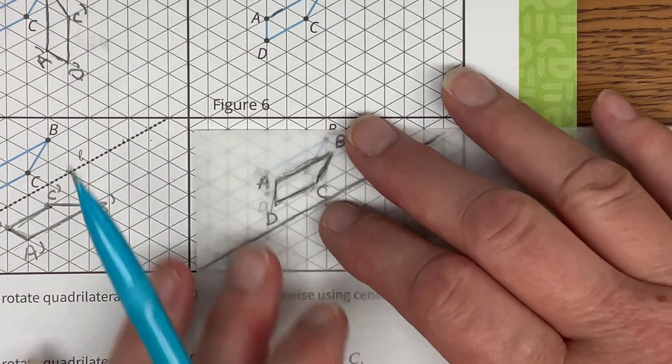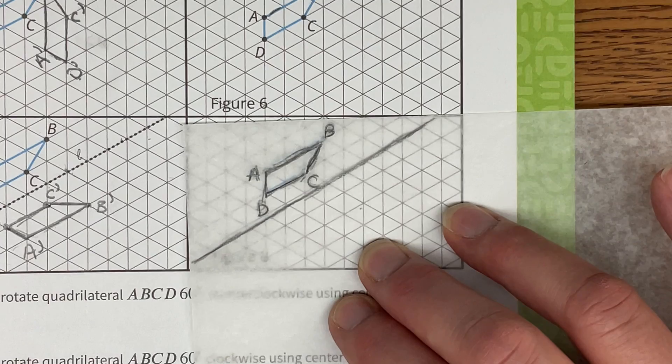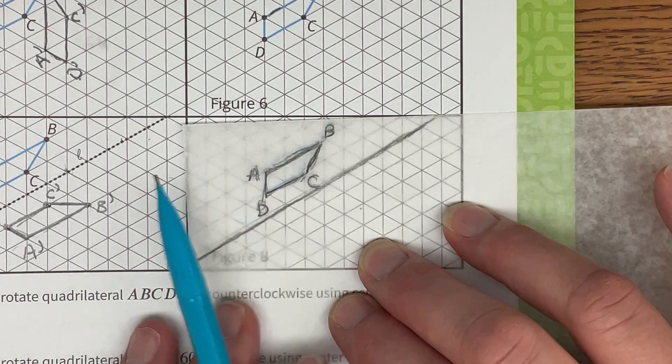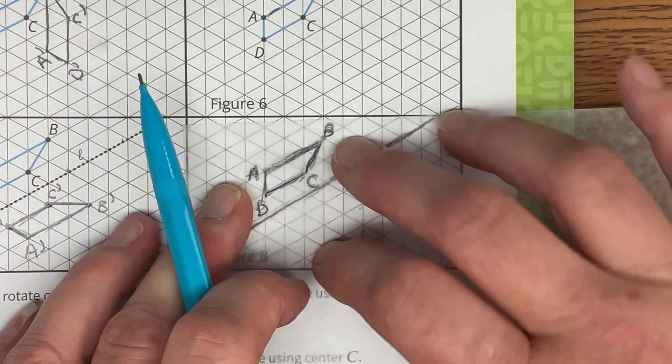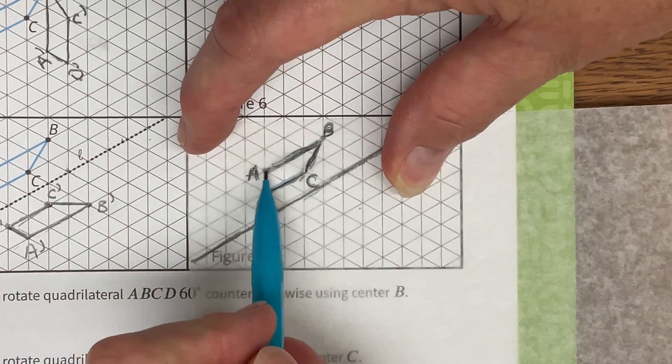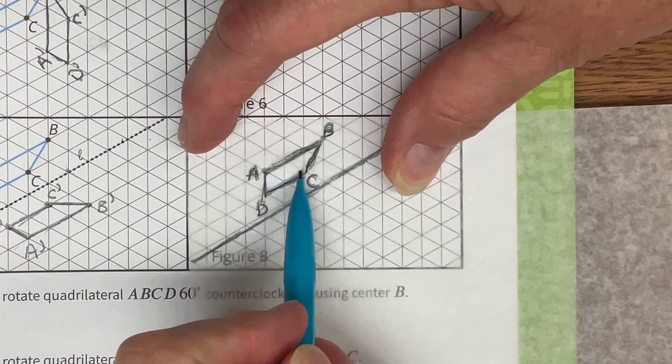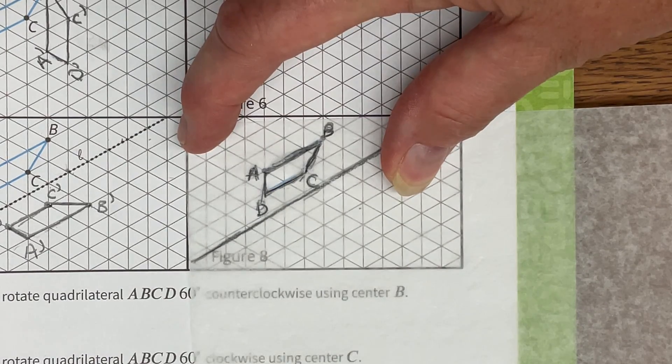So I am just going to use this same picture that I had already traced over for my reflection because it's the same figure. And when they say that I'm taking A to C that means that this point A is simply moving over to where the current point C is.